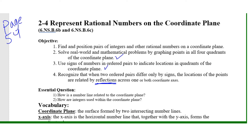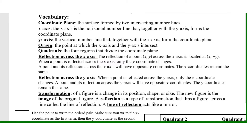I want to give a little refresher for those who may need it. Our essential questions are: how is a number line related to the coordinate plane, and how are integers used within the coordinate plane? A coordinate plane is the surface formed by two intersecting number lines — a vertical number line and a horizontal number line. The horizontal one is the x-axis and the vertical one is the y-axis.